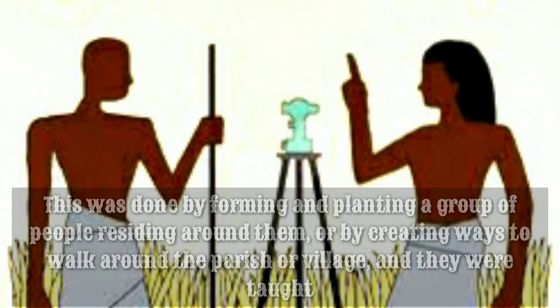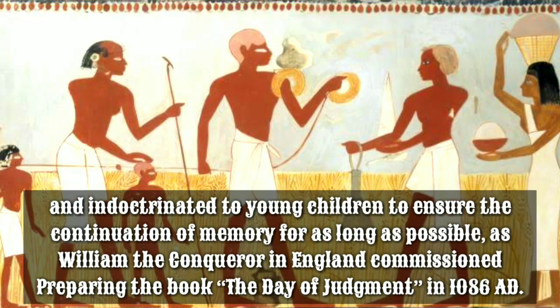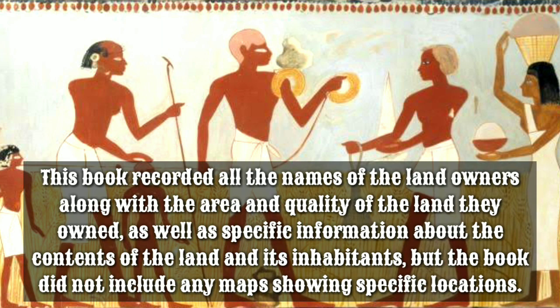These boundary traditions were taught and passed on to young children to ensure the continuation of memory for as long as possible. William the Conqueror in England commissioned the preparation of the book known as the Domesday Book in 1086 AD. This book recorded all the names of the landowners along with the area and quality of the land they owned, as well as specific information about the contents of the land and its inhabitants, but the book did not include any maps showing specific locations.